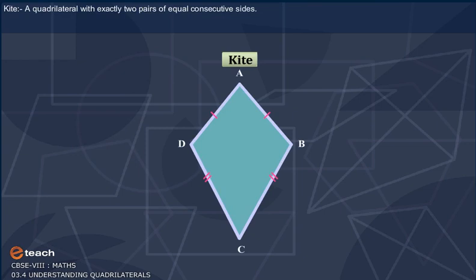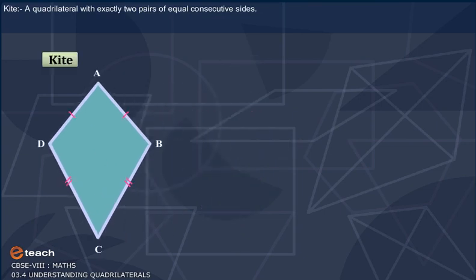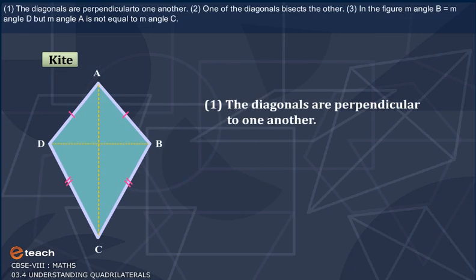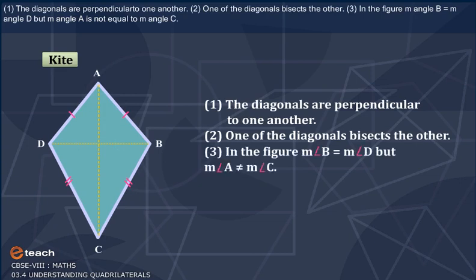Kite: A quadrilateral with exactly two pairs of equal consecutive sides. The diagonals are perpendicular to one another. One of the diagonals bisects the other. In the figure, measure angle B is equal to measure angle D, but measure angle A is not equal to measure angle C.